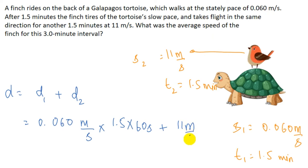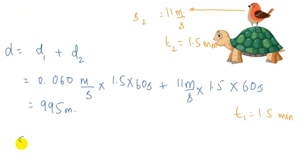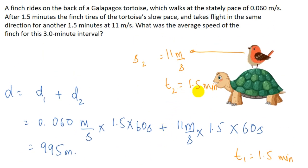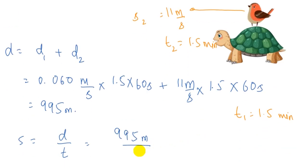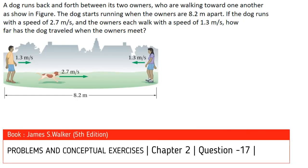d2 = 11 meters per second multiplied by 1.5 minutes times 60 seconds per minute. The total distance comes out to approximately 995 meters. Average speed equals total distance divided by elapsed time: 995 meters divided by 3 minutes times 60 seconds per minute, giving 5.5 meters per second. That is the answer for this question.